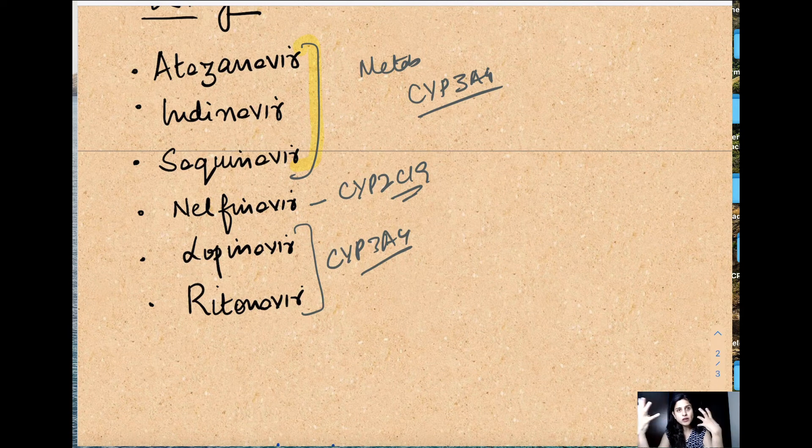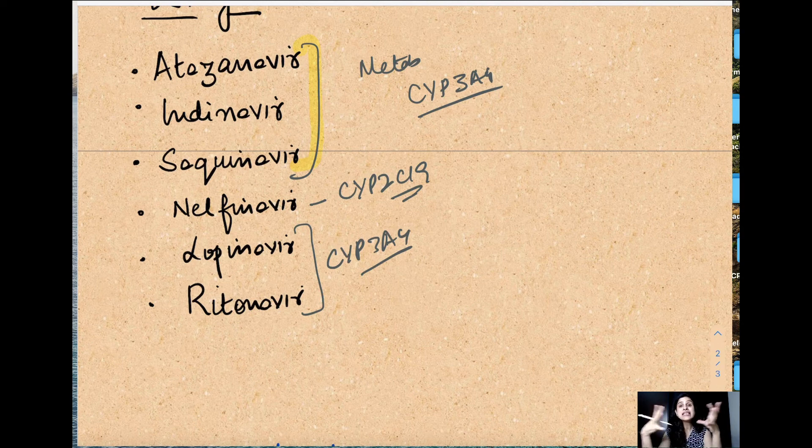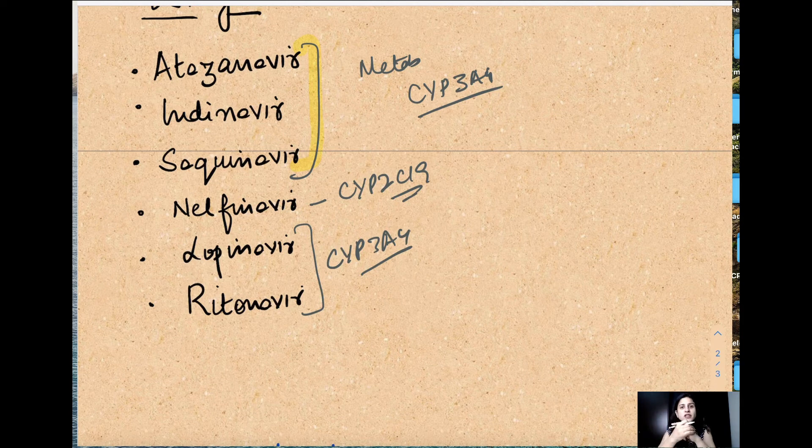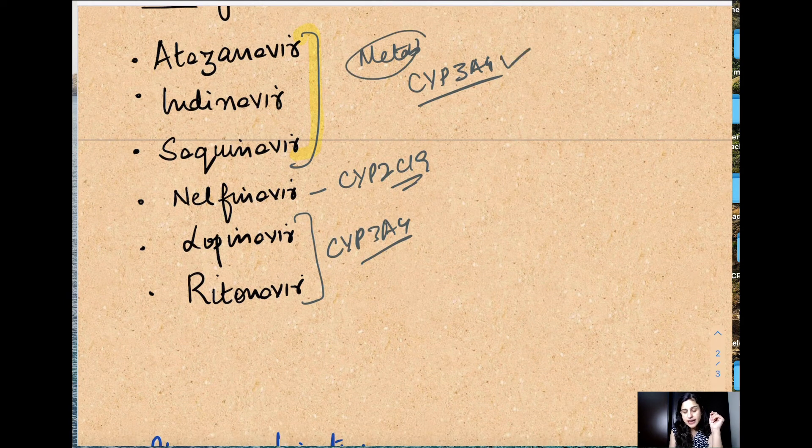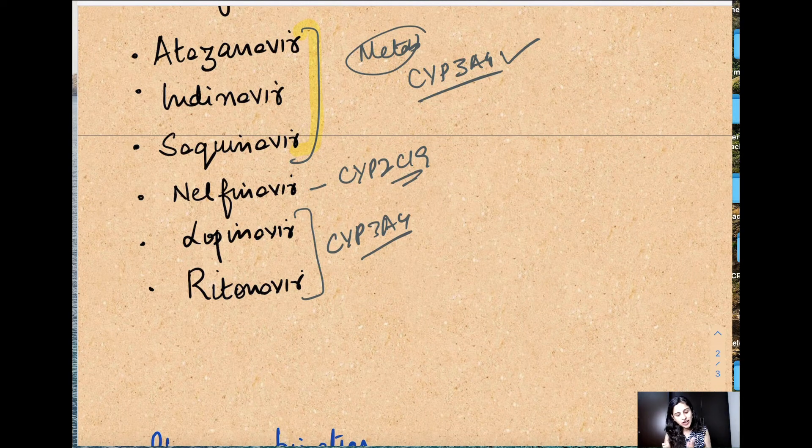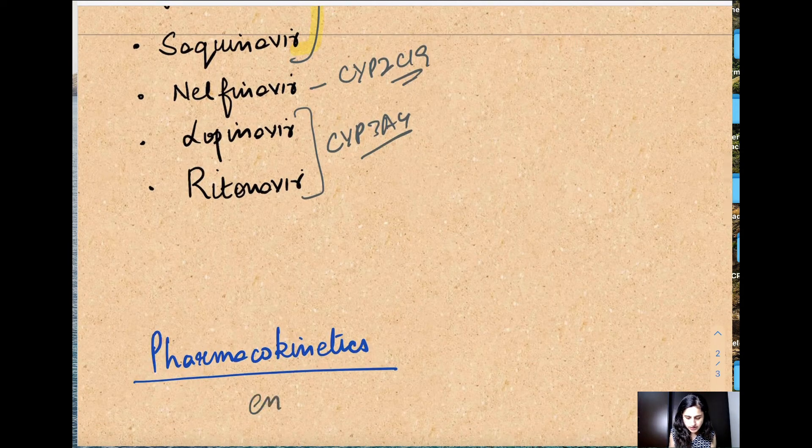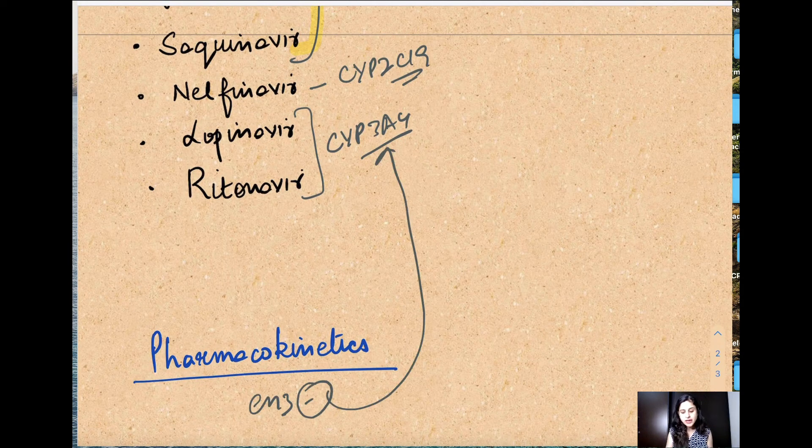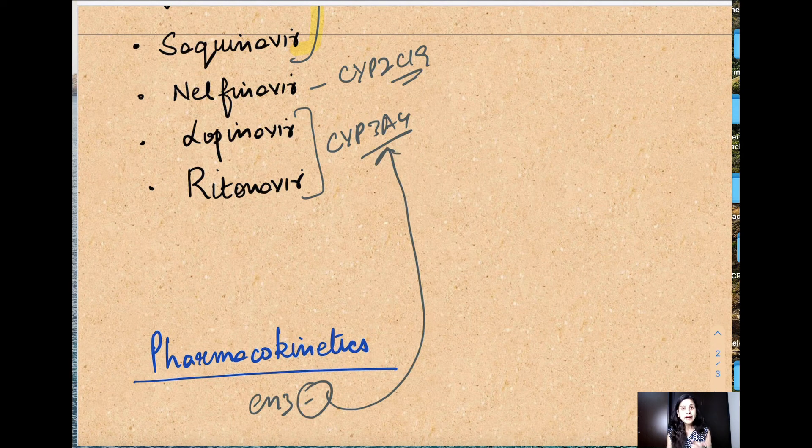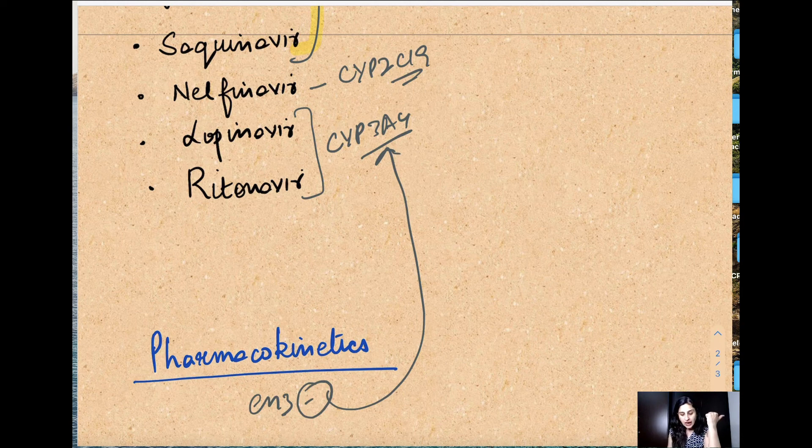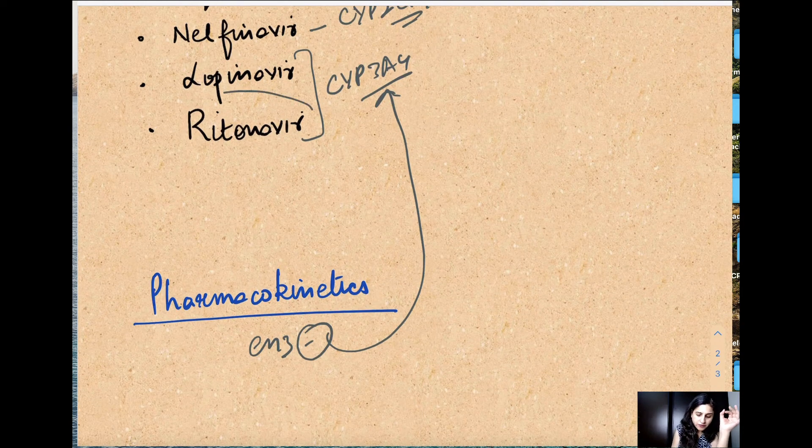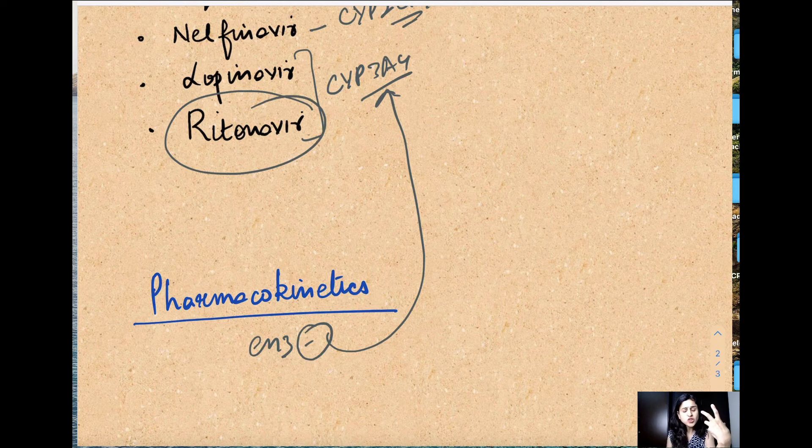Their bioavailability is very variable - can be less like 20%, 30%, 40%. Very less because of this metabolism and low bioavailability. Another important characteristic - these drugs are metabolized by this enzyme. The other interesting thing is these drugs are enzyme inhibitors, and they inhibit the same enzyme CYP3A4. The strongest inhibitor is ritonavir.